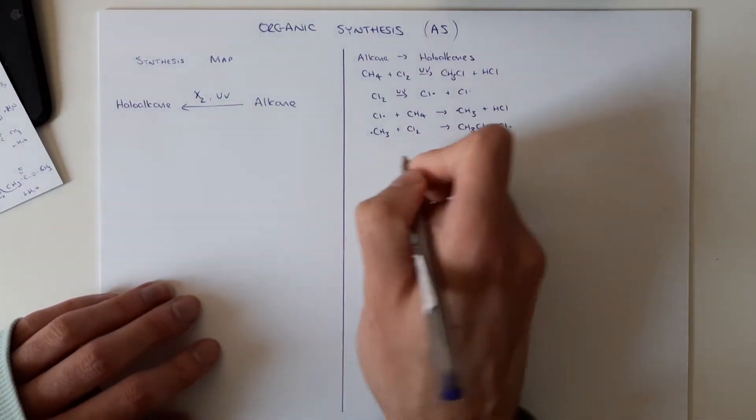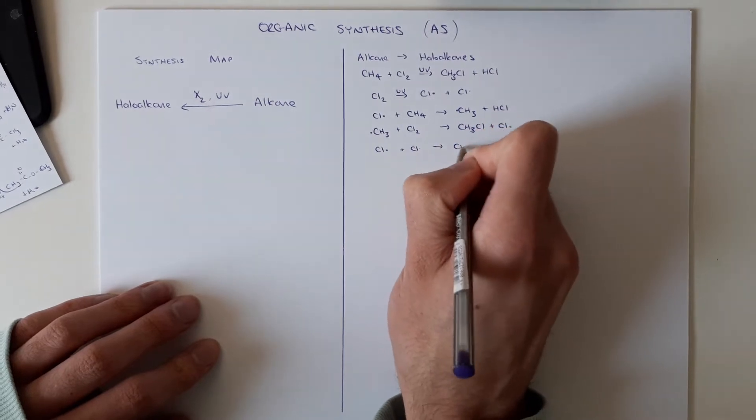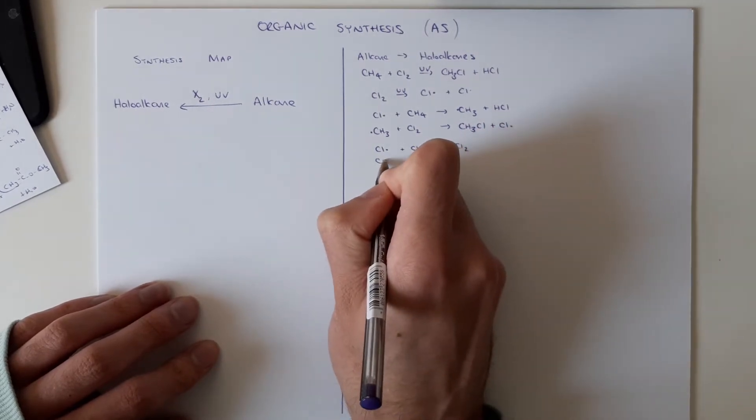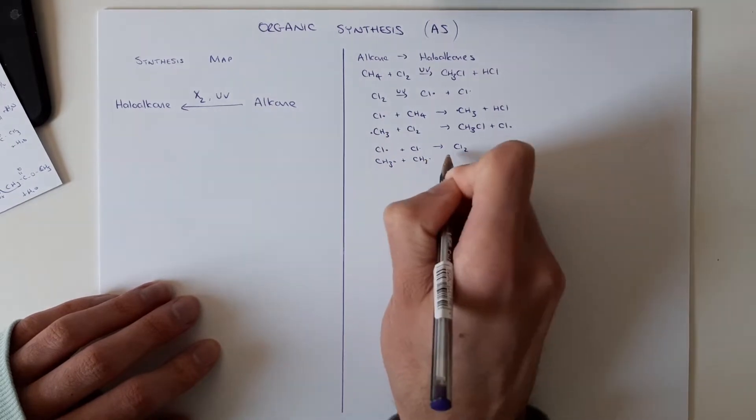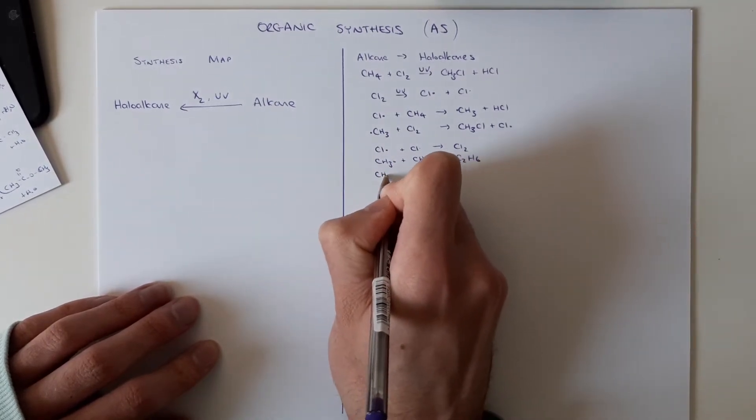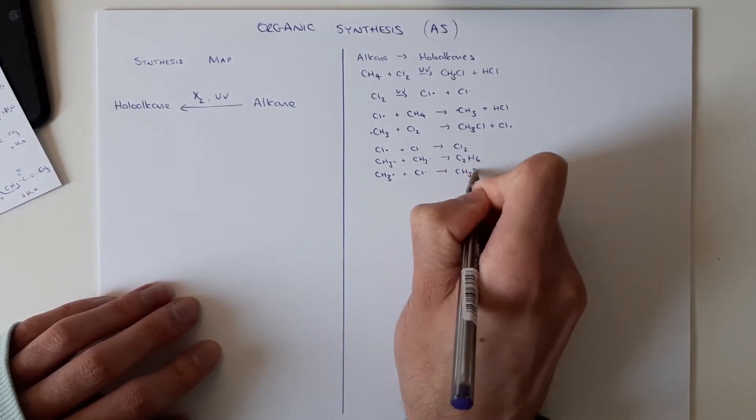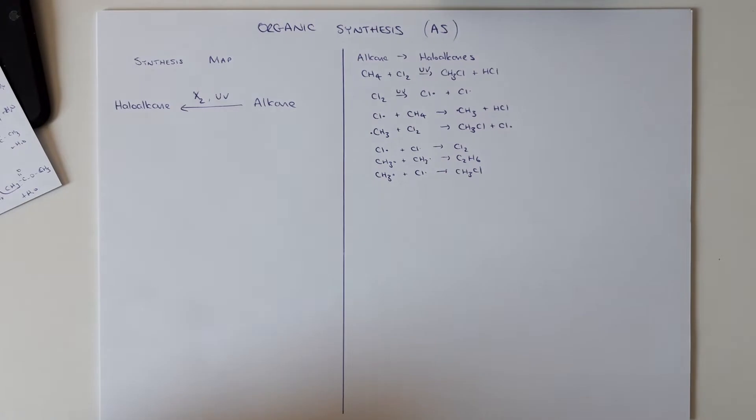We can have a number of termination steps as well that you need to be familiar with but end the mechanism. So chlorine radicals coming back together, two methyl radicals forming C2H6 and even a methyl and a chlorine radical forming CH3Cl. So it gets rid of the radical. Need to be able to memorize that mechanism.